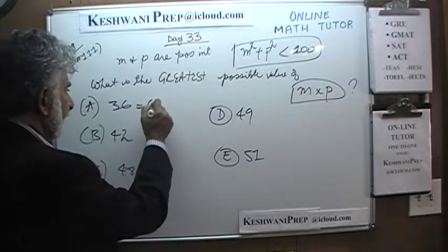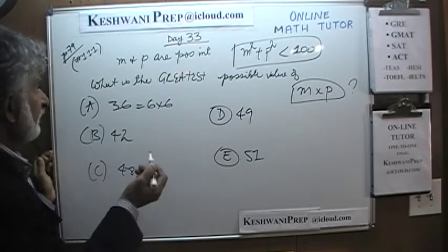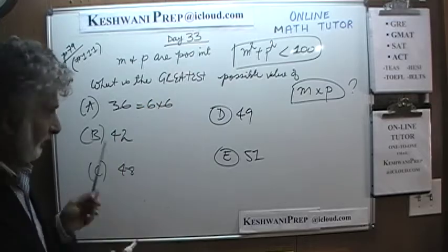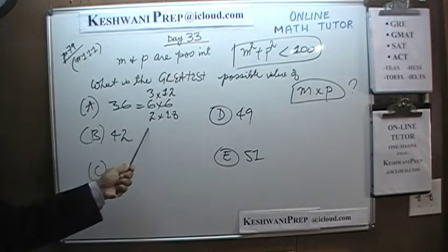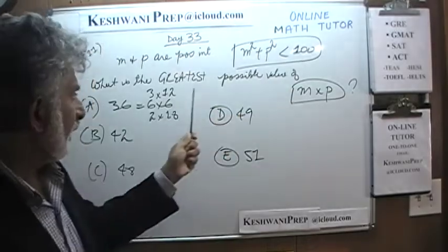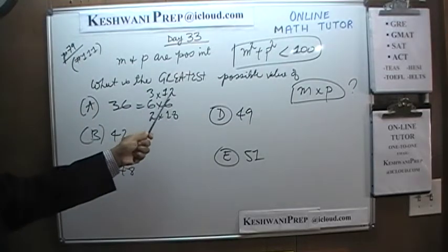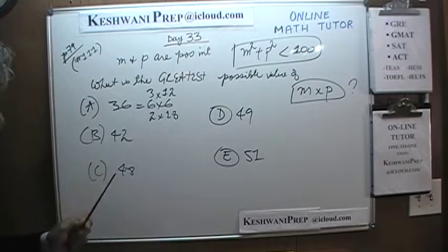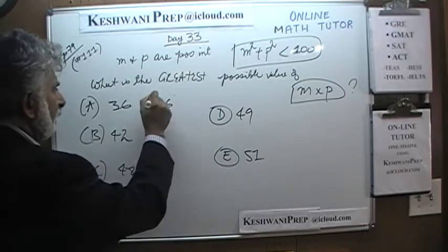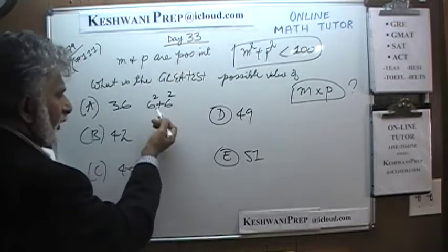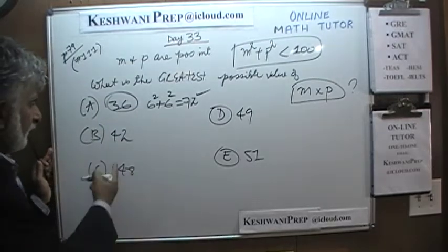36 can be written as 6×6. Other possibilities like 2×18 or 3×12 don't work because 12² alone exceeds 100. With M = P = 6, we get 6² + 6² = 72, which is less than 100. Now, 7×6 = 42, and 7² + 6² = 49 + 36 = 85, which also works — and 42 is bigger than 36. So A is not the answer.